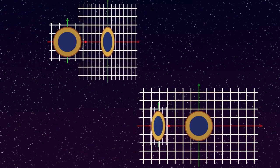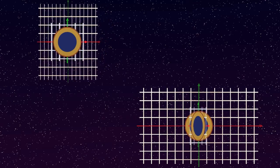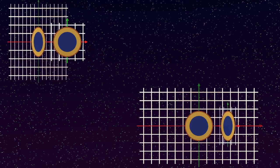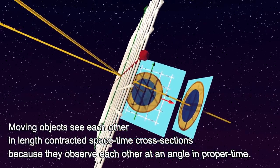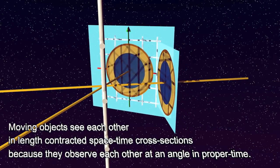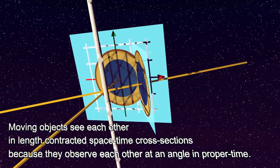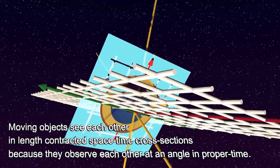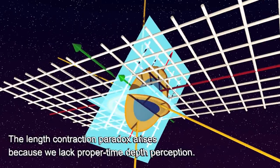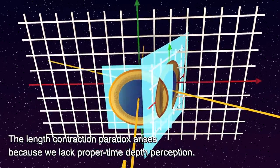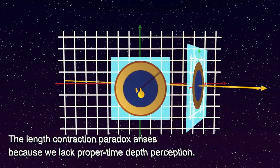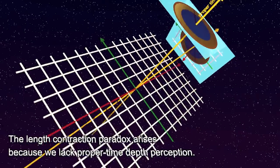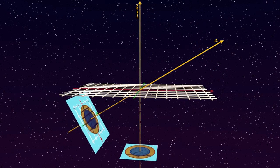So, does either lab become smaller than the other along the direction of motion? Not really. Only their observed space-time cross-sections do, because they see each other at different space-time angles in their respective time orthographic views of space-time. We can say that the length contraction paradox arises simply because we lack proper time depth perception. To navigate the relativistic world, we must learn to find and properly interpret what we may call proper time depth cues.